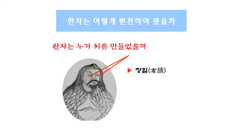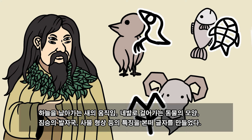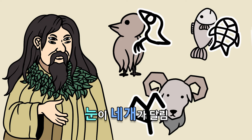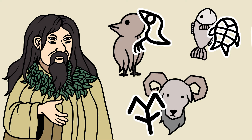그러면 얘는 어떻게 만들었냐는 질문에 대해, 하늘을 날아가는 새의 움직임, 네 발로 걸어가는 동물들의 모양, 짐승의 발자국, 사물의 형상 등을 보고 특징을 따서 만들었다고 합니다. 나도 만들 수 있잖아 싶지만, 창힐은 눈이 4개이기 때문에 우리가 보지 못하는 것까지 볼 수 있어서 눈이 4개 달린 괴물이 되어버린 거죠.